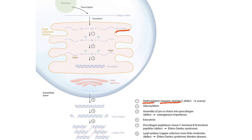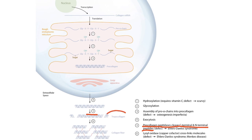Once pro-collagen is formed, it is moved to the Golgi apparatus and then secreted into the extracellular space via exocytosis. The ends of the molecule are then cleaved by C and N pro-collagen peptidase enzymes, at which point the molecule is called tropocollagen. Tropocollagen is then cross-linked with other tropocollagen molecules by the enzyme lysyl oxidase, resulting in the formation of a mature collagen fiber.